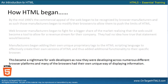This became a nightmare for web developers, as now they were developing across numerous different browser platforms, and many of the browsers had their own unique way of displaying information. When I was coming into web development in the 1990s, every browser treated things differently. Text was pretty much standard across all browsers, but there were different attribute tags for images, different attribute tags for links, and things were handled differently for displaying columns, formats, and tables. So as you were writing for the web, you were actually writing for different types of browser applications.